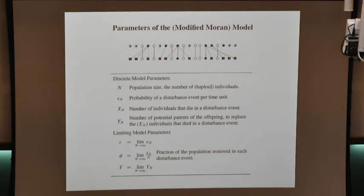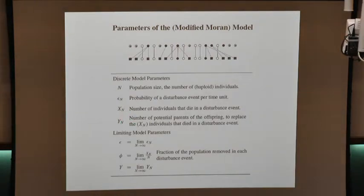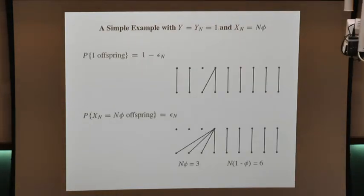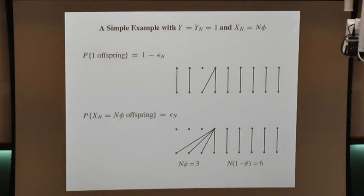In the Moran model, one individual dies and one individual reproduces. In this model, X individuals die and Y individuals reproduce — anywhere from one up to the total population size. Here's a simple example where Y equals 1: one individual is a potential parent, and that individual can replace a fraction of the total population — a very large number of opportunities.